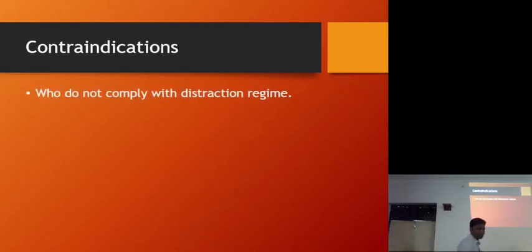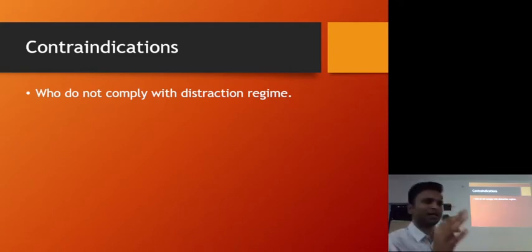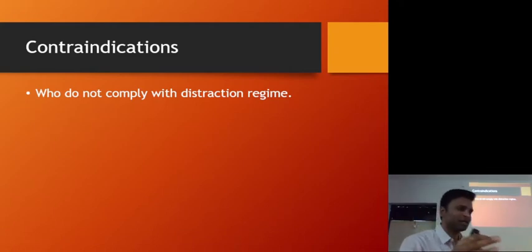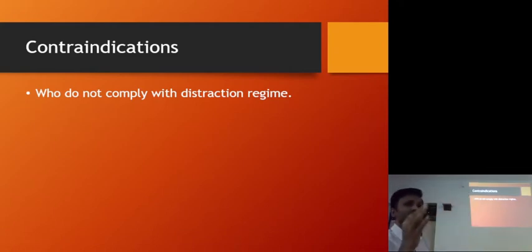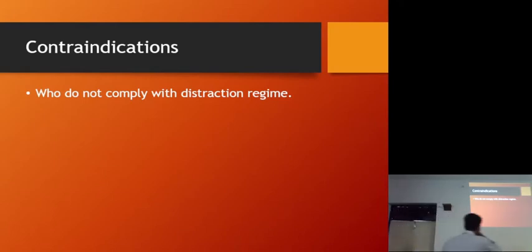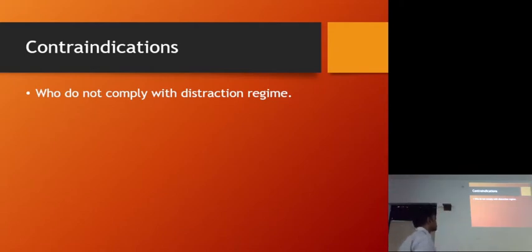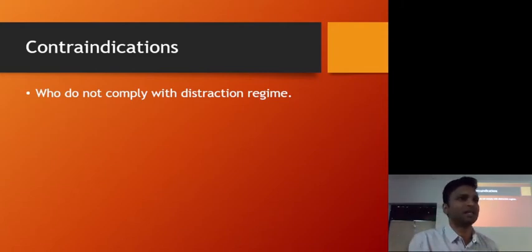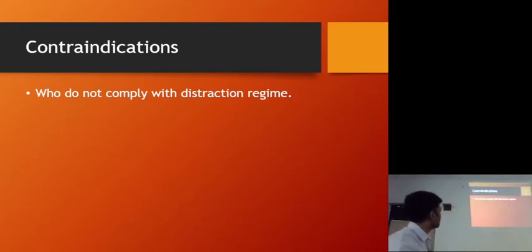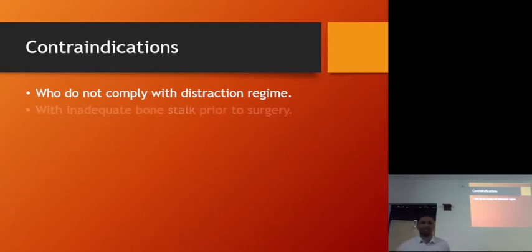Now contraindications. This is going to be a long procedure — at least eight weeks for consolidation, and after that the patient will have to wait for the bone to remodel. So it takes a lot of commitment from the patient. Patient compliance is important. Patients who are not keen on compliance — mentally challenged patients or very old patients — are not ideal candidates for distraction osteogenesis.